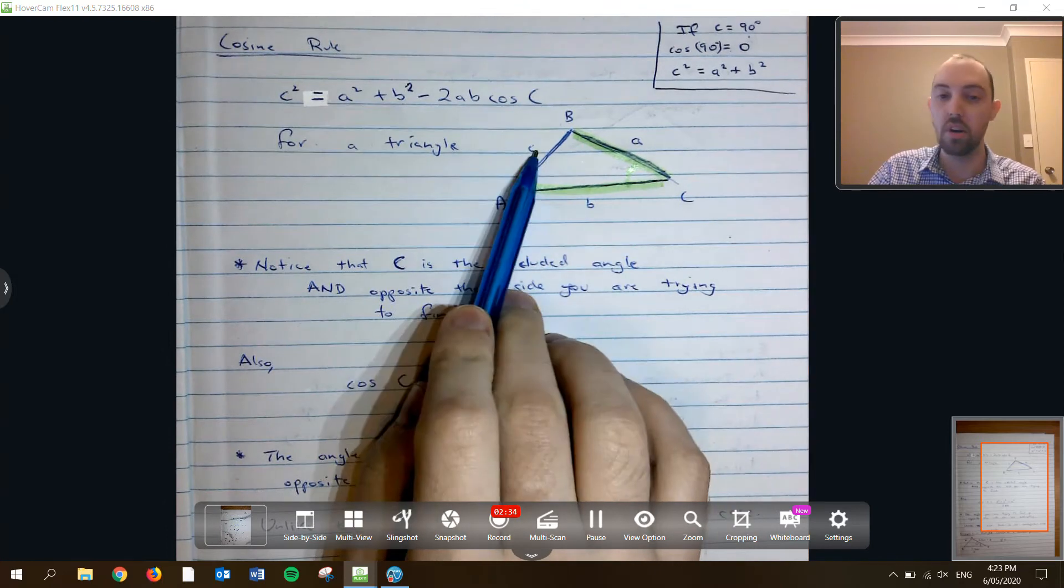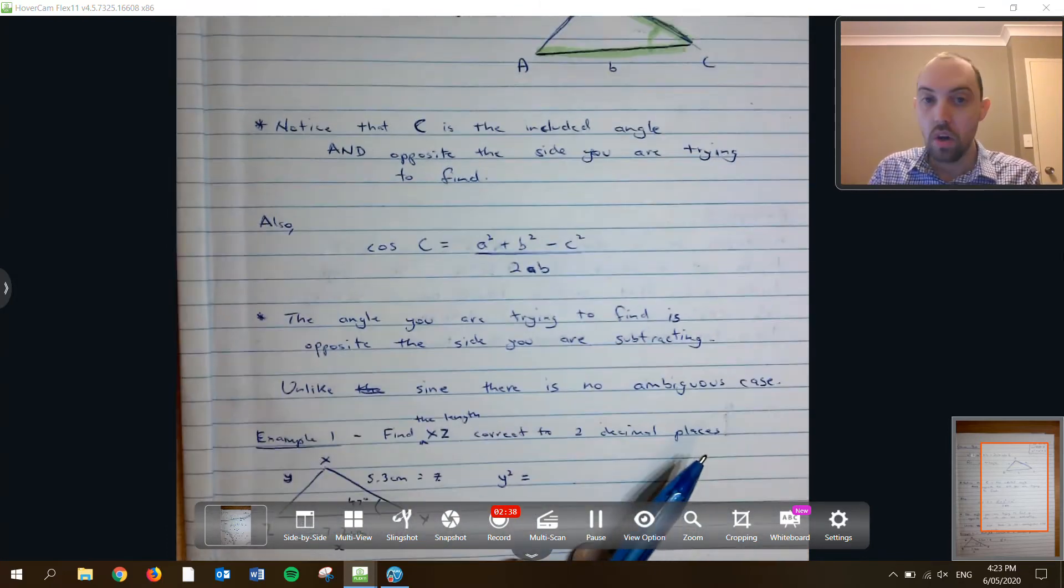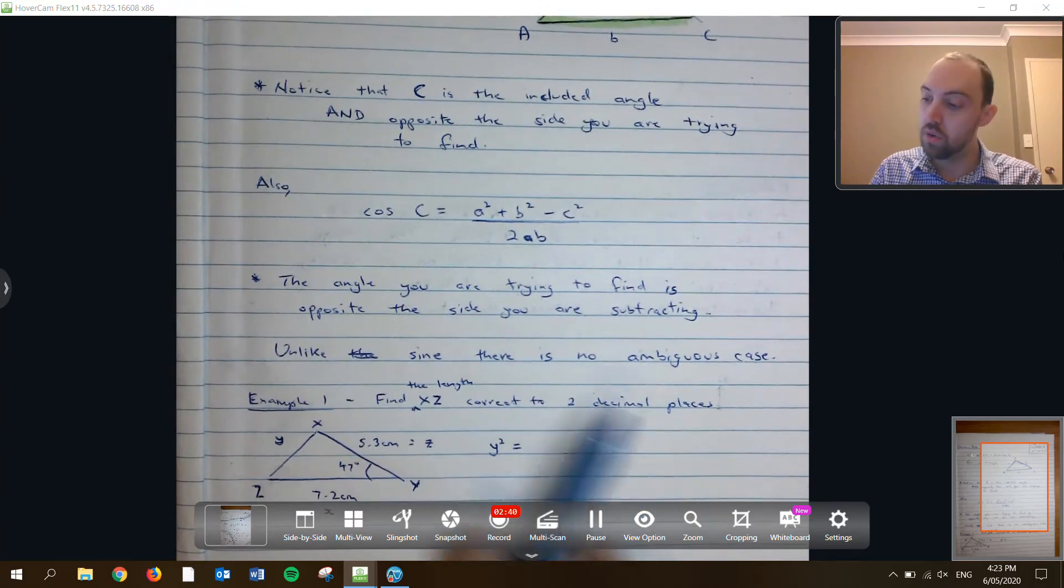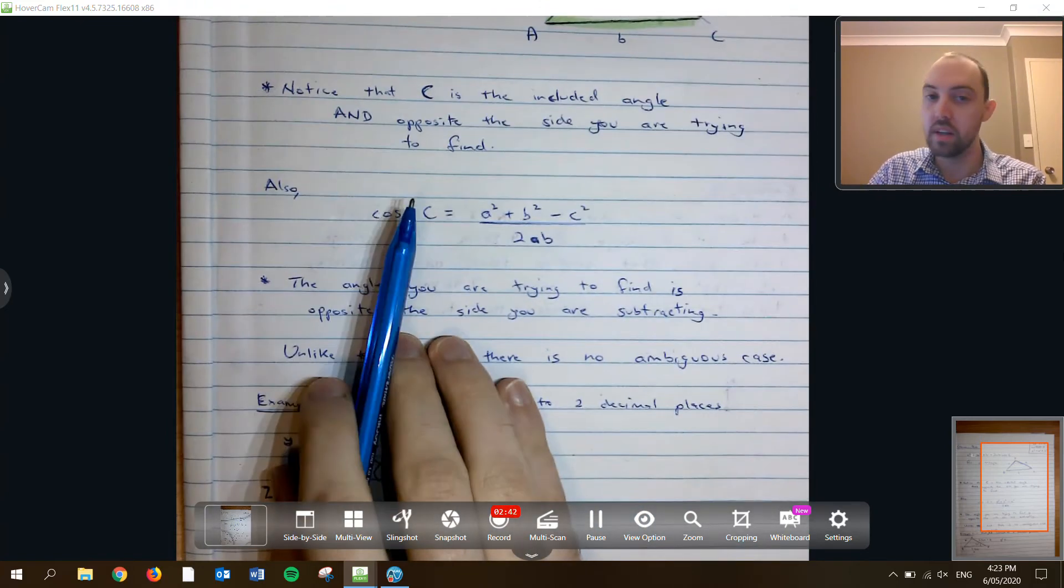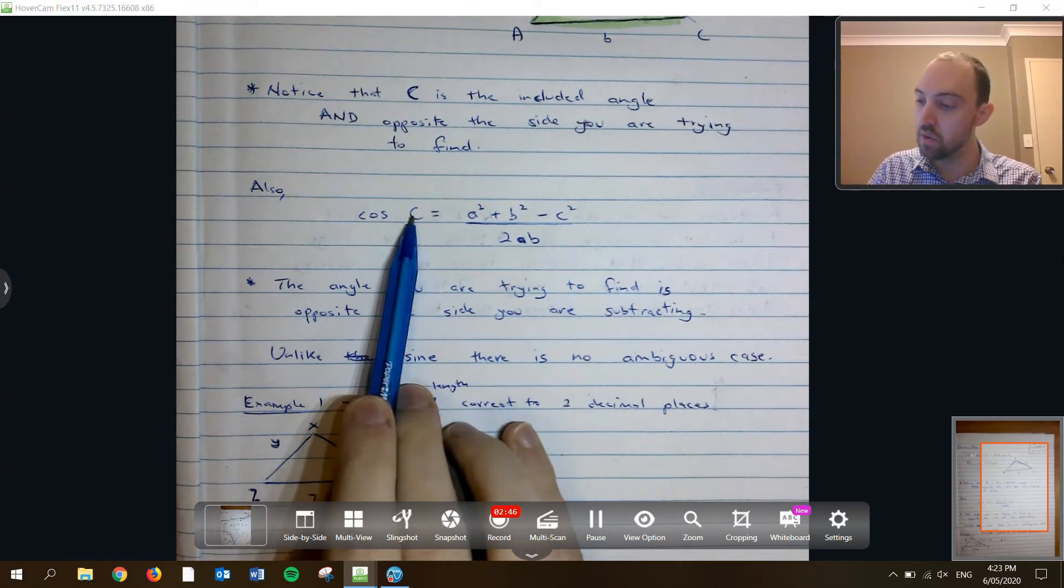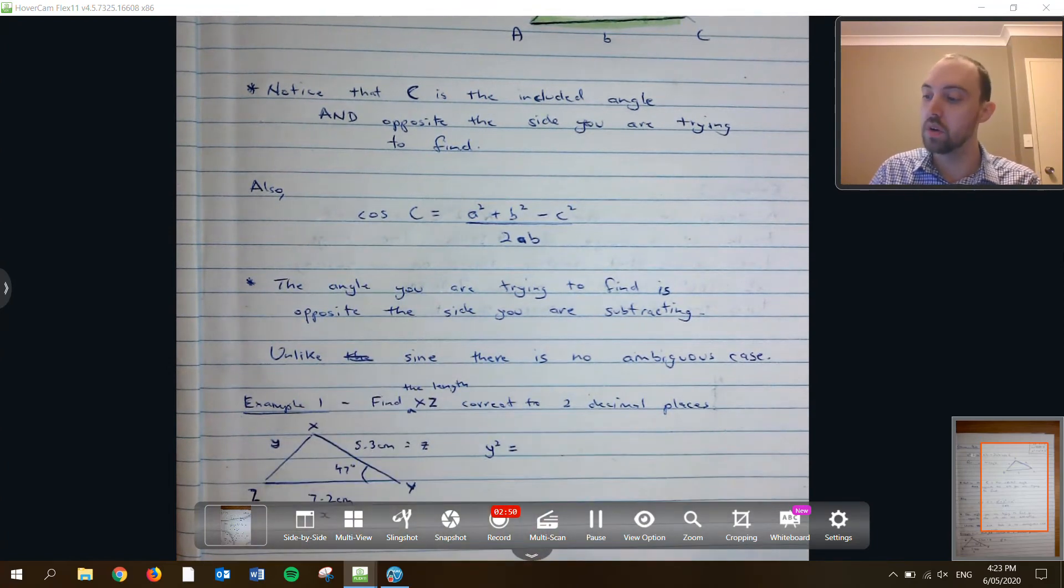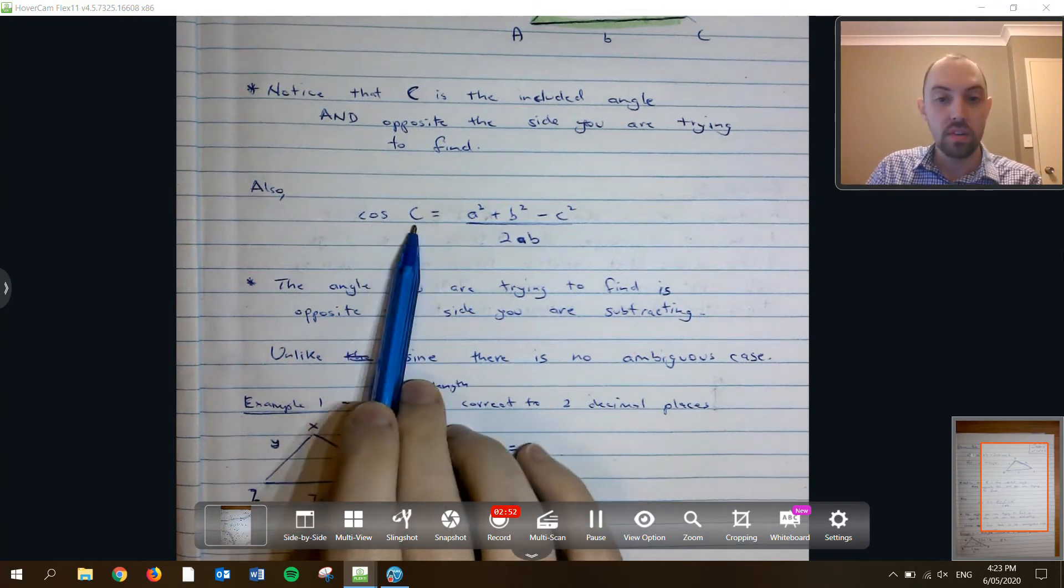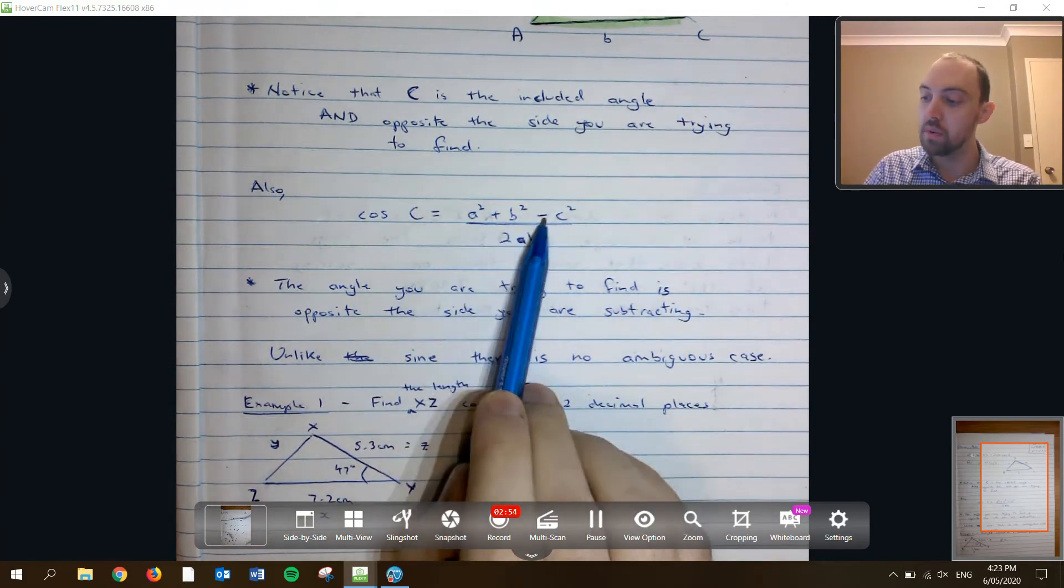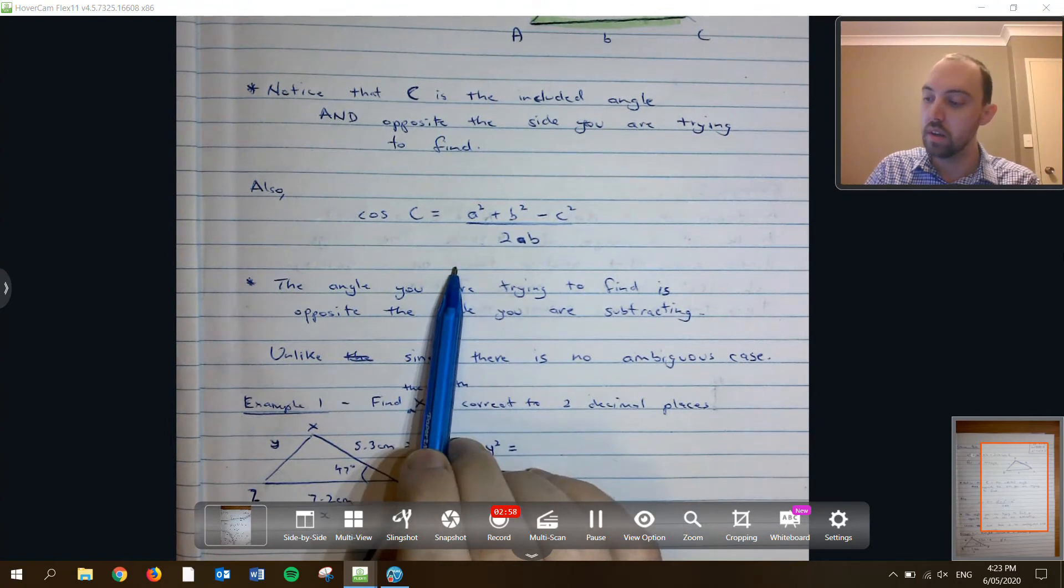And you're trying to find the side that is opposite that. Anyways, moving forth, you can also rearrange the cosine rule to get the angle on one side. You would need to do the inverse of cos to finish it up, which I'll show you an example. Cos c is equal to a squared plus b squared, takes c squared, all over 2ab.